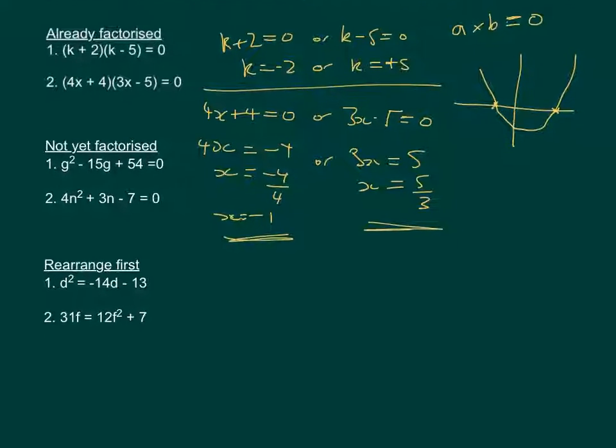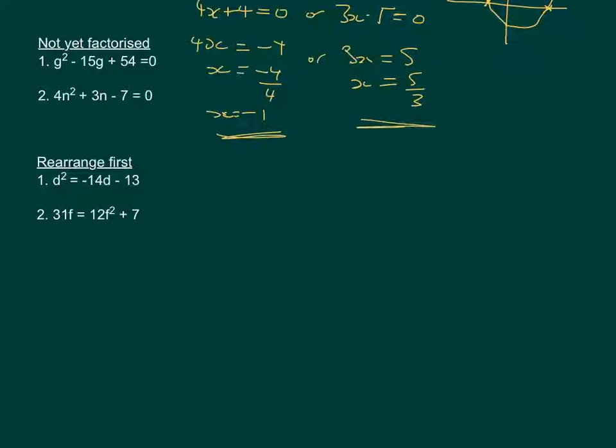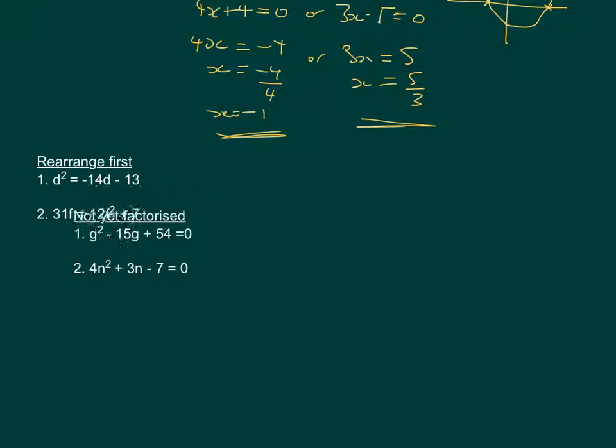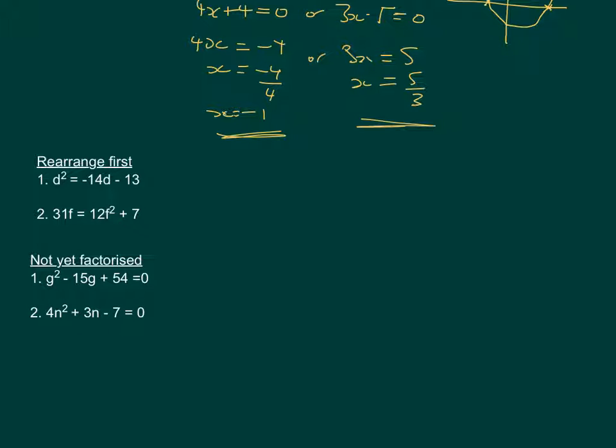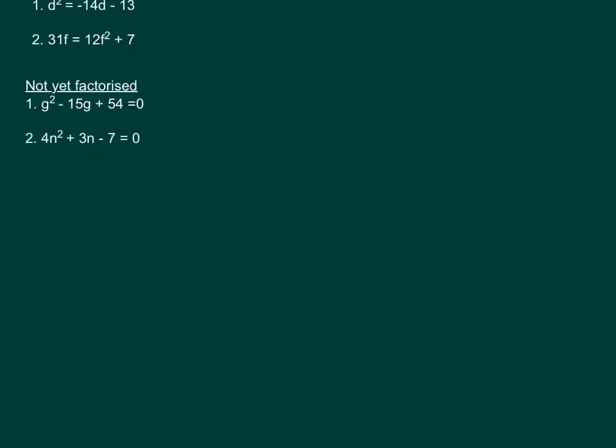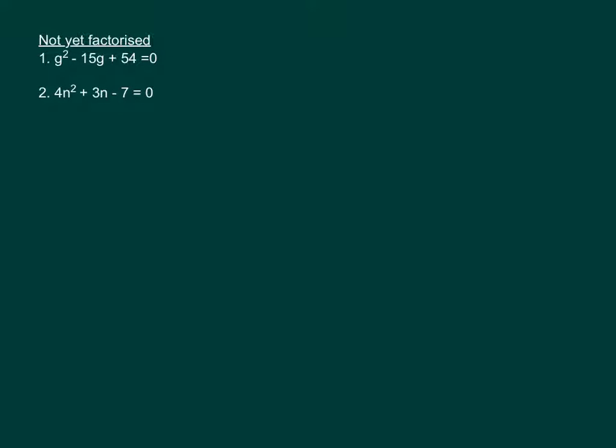Now let's move on to the second type, where the expressions have not yet been factorised. The first one we've got, g squared minus 15g plus 54. So we need to factorise that expression. So we've got to think of two numbers that multiply to make 54 and add to give minus 15. So that's going to be g minus 6 and g minus 9.